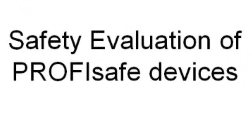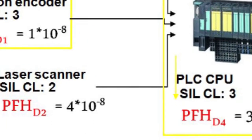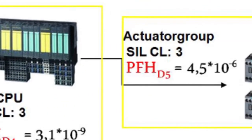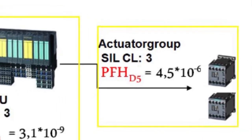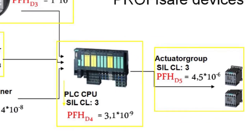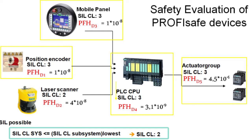Generally, a safety function is realized with several subsystems: a laser scanner to detect the danger, a logic solver to select the appropriate reaction, and a drive system to perform this reaction. In machinery, according to the harmonized standards ISO 13849-1 and IEC 62061, SIL claims, PL and PFH are available or can be determined for each subsystem. This information is available for any ProfiSafe device.